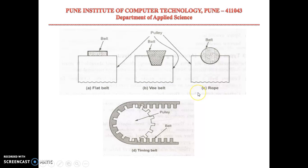Another kind of drive is a rope drive, where the cross section is circular. Rope drives are used where a great amount of power is to be transmitted from one pulley to another when the two pulleys are more than eight meters apart.